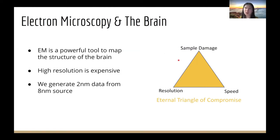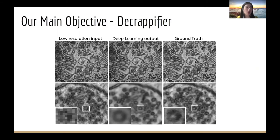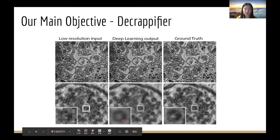Our models are able to generate 2nm resolution images from 8nm resolution sources. Our main objective, known as a decryptifier, is the deep learning model that decryptifies EM images and enhances them to a higher resolution. As is shown here, the decryptifier restores details to the image as compared to the lower resolution input. But as you can see here, the generated image differs from the ground truth in texture — it looks more blurry and surreal. That's our main focus of this project.